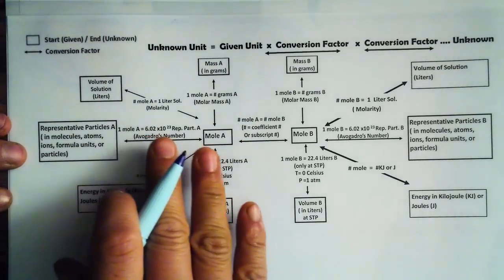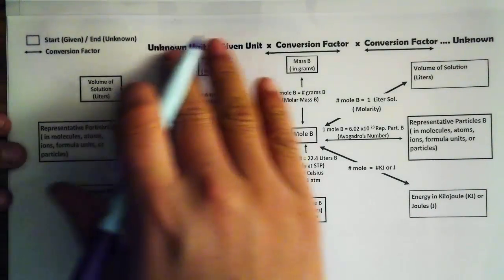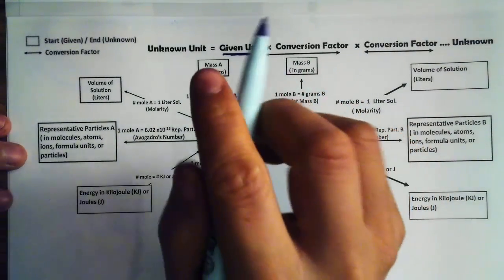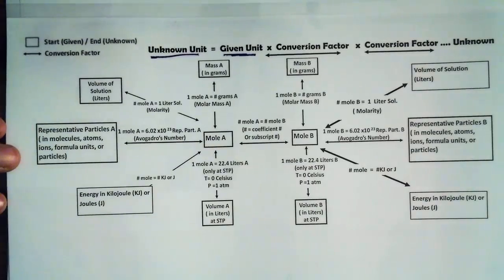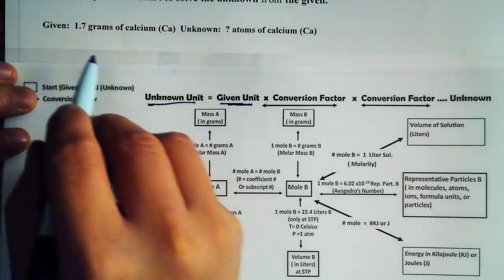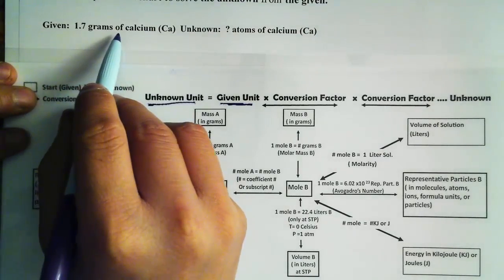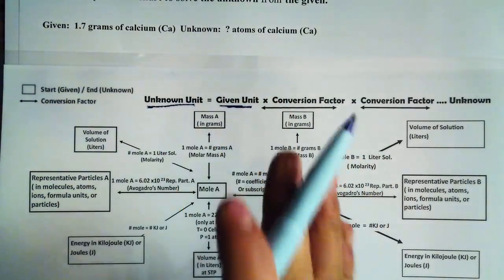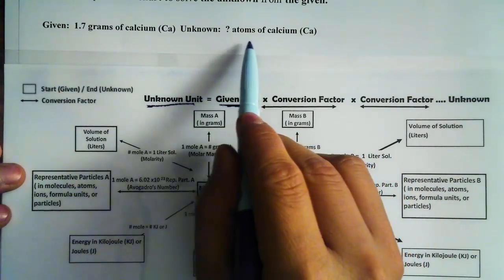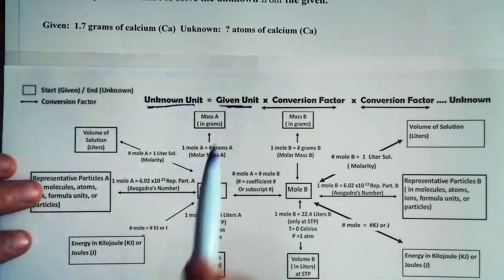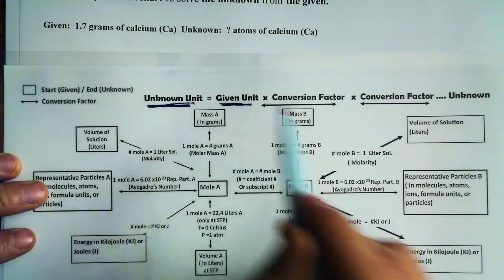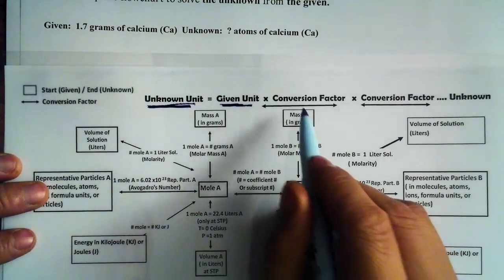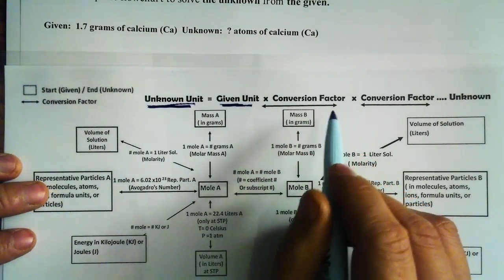In the previous lesson, we learned how to use the conversion factor flowchart in a way that we can take the given units or the given values and find the unknown unit. Like in this case, we are looking at this example problem. Here we are given 1.7 grams of calcium, and we are looking for how many atoms of calcium are in that 1.7 grams.